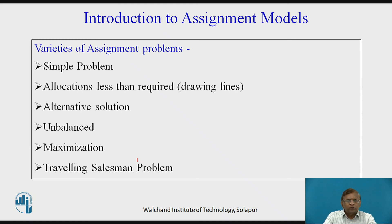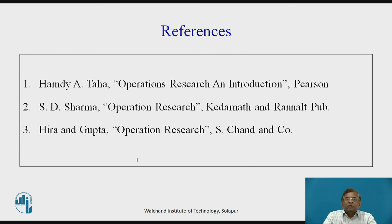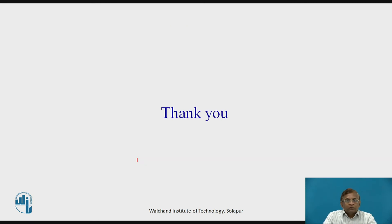The last case is the travelling salesman problem, which involves a salesperson moving from one city to another in a chain style. With five cities, the salesperson must visit all five and return to the original destination. This is a special case of assignment problems. The reference books for this topic are Taha, Sharma, and Gupta. Thank you.